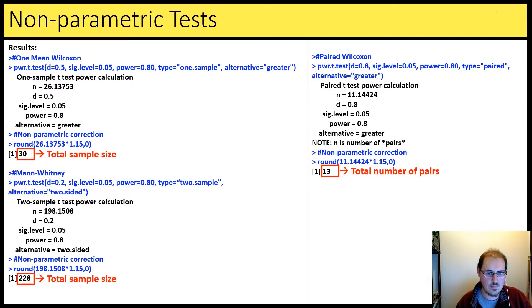Let's take a look at the results here for the one means Wilcoxon. So we're just going to use power t-test here, effect size, one sample again. Then we get this out for our parametric sample size, but then we need to get a correction for non-parametric. So we're going to round up and multiply by 1.15, which is going to give us a total sample size of 30. So 30 is greater than 26 because the non-parametric are less powerful.